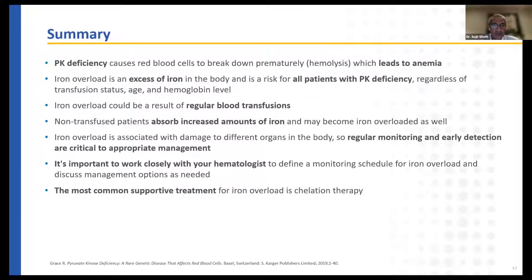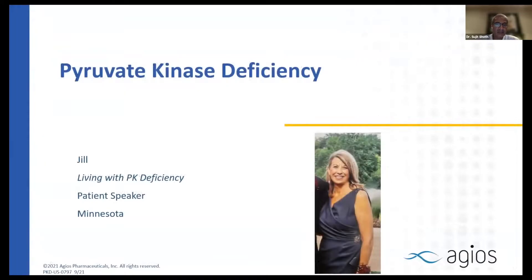To summarize: pyruvate kinase deficiency causes red cells to break down prematurely — hemolysis — which leads to anemia. Iron overload is an excess of iron in the body and is a risk for all patients with pyruvate kinase deficiency, regardless of whether they're getting transfused, regardless of age — though the older you are the more likely you are to be iron overloaded — and regardless of hemoglobin level. Iron overload can result from transfusions or from increased iron absorption from the intestine in non-transfused patients. Iron overload is associated with damage to different organs, so regular monitoring and early detection are critical, and the most common treatment is iron chelation therapy.